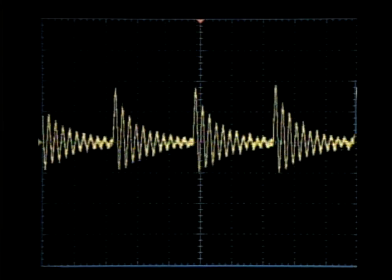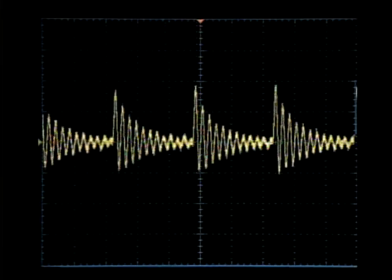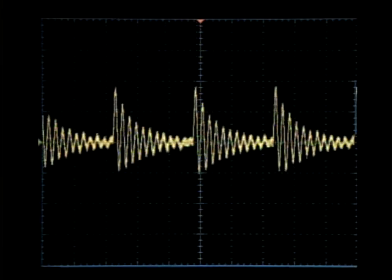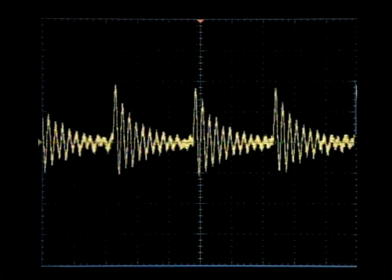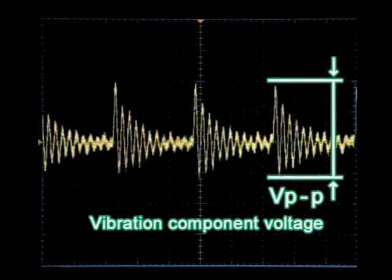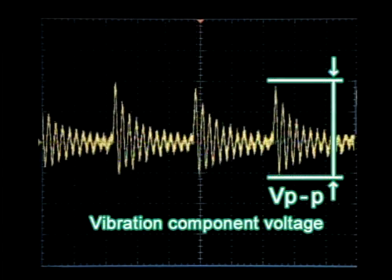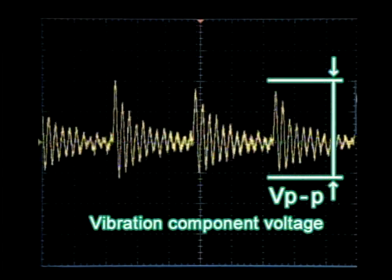When the motor speed is constant, a constant DC voltage is produced. But if the motor speed is not constant, the DC voltage is not constant either. The fluctuation range can be represented as a vibration component voltage to indicate the degree of vibration.